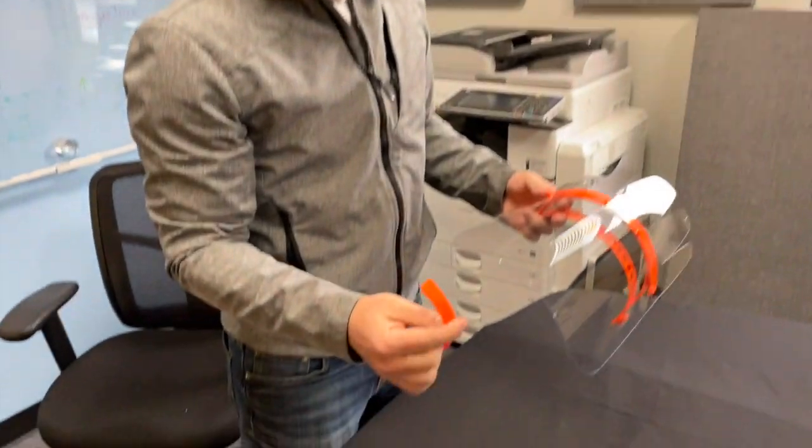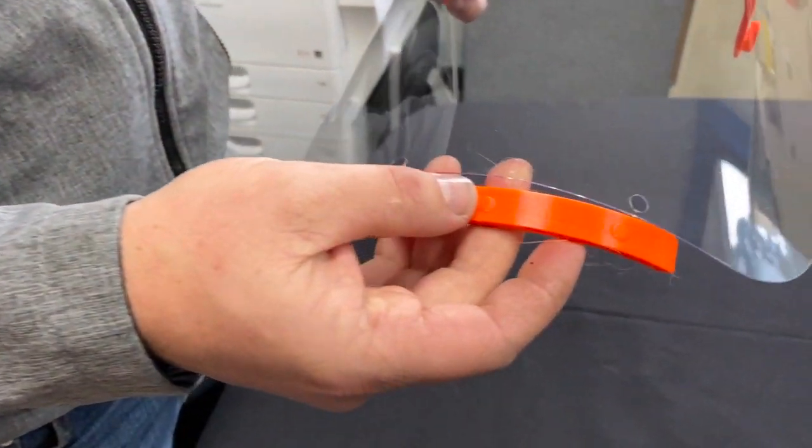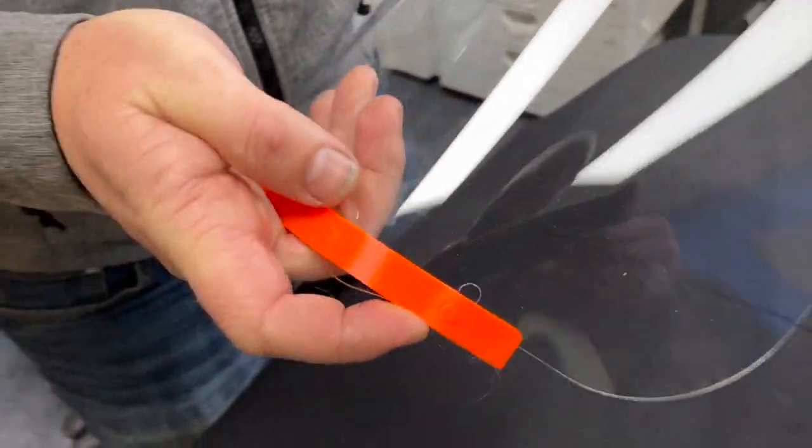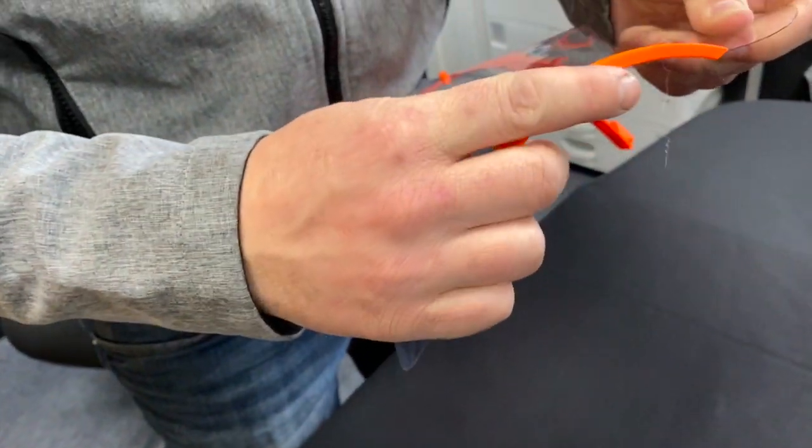Take the bottom stabilizer and align the pins with the holes in the face shield and press that into place.